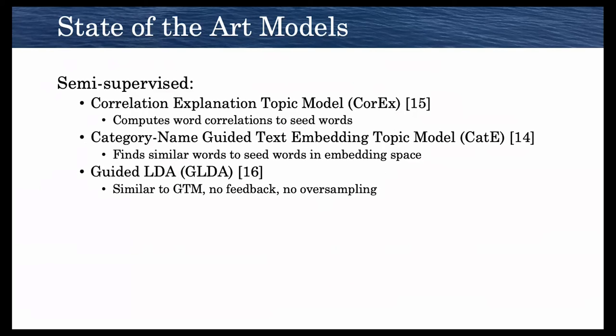The state-of-the-art topic models that we test against are the correlation explanation topic model CoreX, CatE, category name guided text embedding model, and guided LDA, which is similar to GTM but doesn't add feedback and doesn't add the GPU seed word sampling.